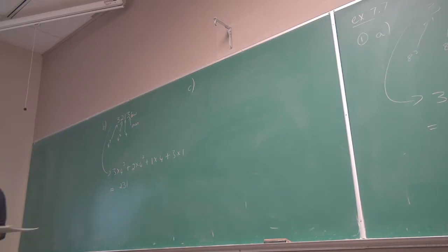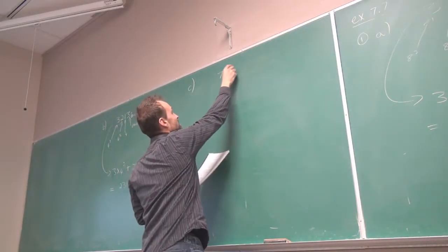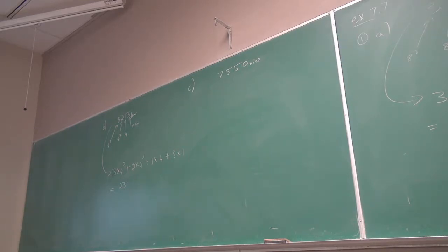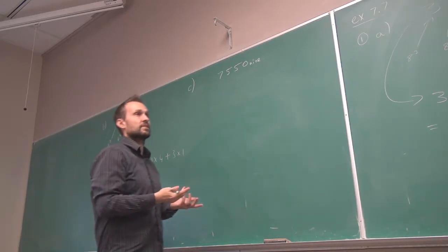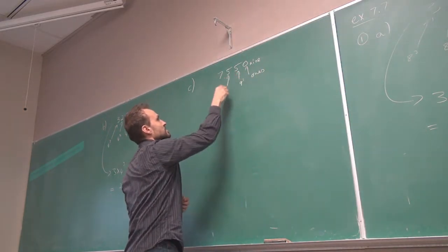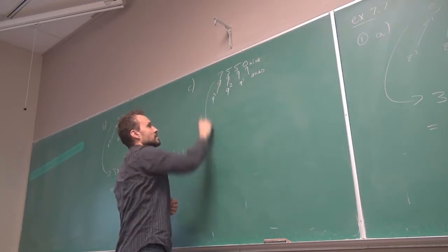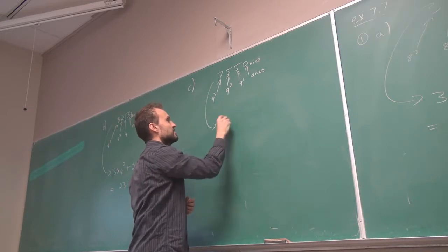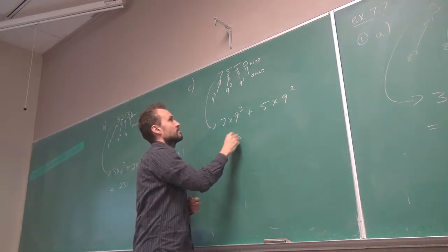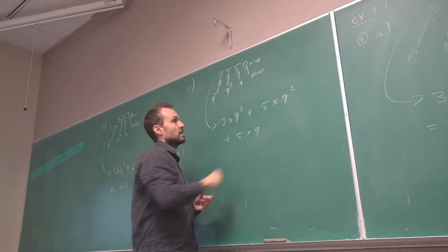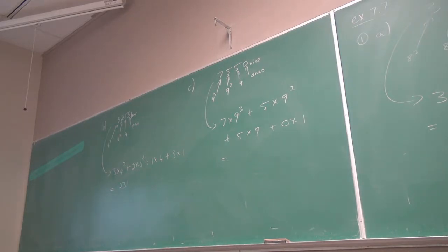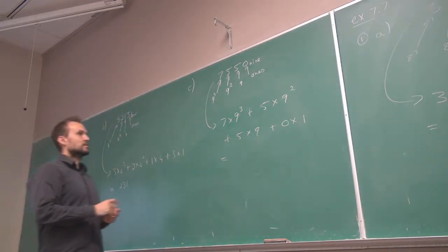Part C: 7550 base 9. We can keep the base value small rather than going to the 60s, but you could definitely have anything. This counts ones, nines, 9 squared, 9 cubed. So it is seven groups of 9 cubed, five groups of 9 squared, five groups of 9, plus zero ones. The calculator gives 5553.